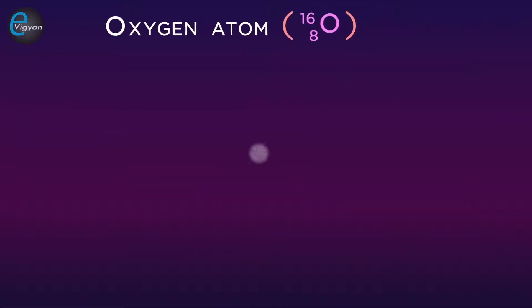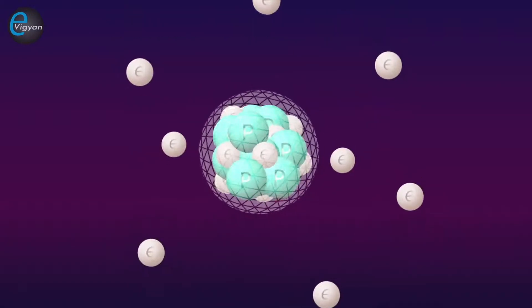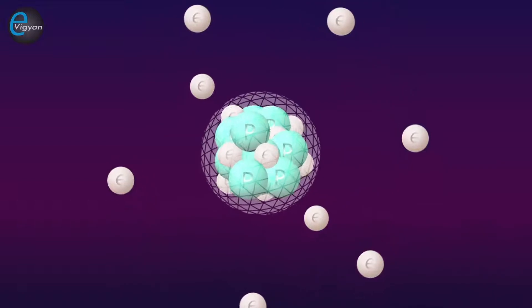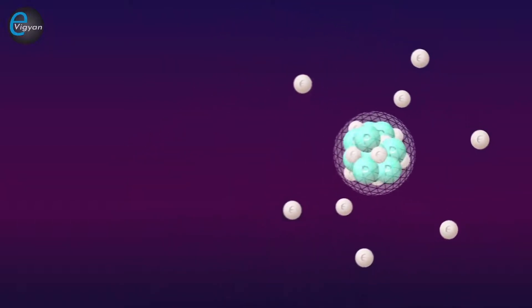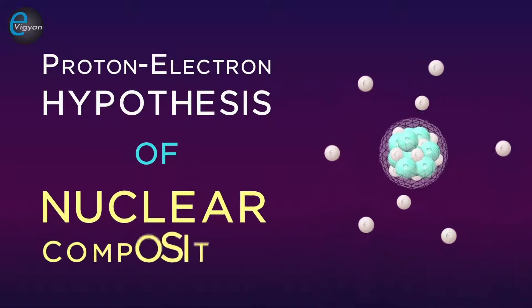For example, an oxygen atom would have a nucleus with 16 protons and 8 electrons, with 8 additional electrons outside the nucleus. This model of the nucleus is known as the proton-electron hypothesis of nuclear composition.